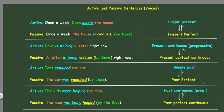In passive sentences, you need a verb 'to be,' and that verb to be takes the tense from the active sentence. So 'to be' in simple present is 'is,' and our main verb goes to the third form. The third form of 'clean' is 'cleaned.' So we have: once a week, the house is cleaned by Dave.